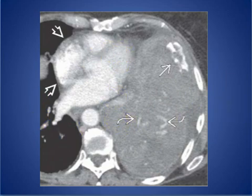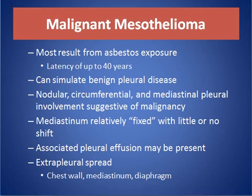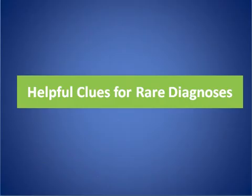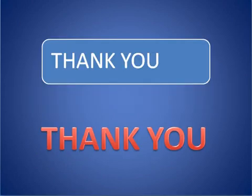Malignant mesothelioma most commonly results from asbestos exposure and needs about 40 years to develop. It can simulate benign pleural disease and can be nodular or circumferential with mediastinal involvement suggesting malignancy. The mediastinum is relatively fixed with little or no shift; associated pleural effusion may be present, and extra-pleural spread occurs toward the mediastinum and diaphragm. Thank you for listening, and hoping to see you in another talk.